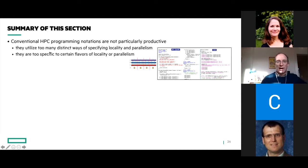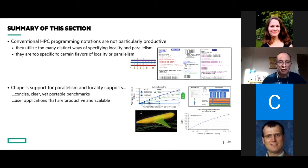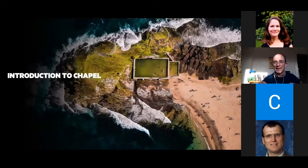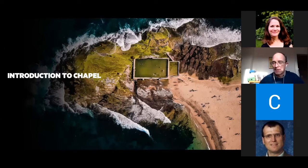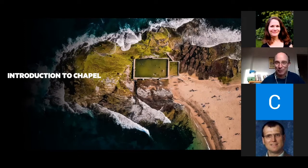To summarize this section: conventional HPC programming notations are not particularly productive. They have too many different ways to talk about the key things we care about — locality and parallelism — and each one of those ways tends to be too specific to certain flavors of locality or parallelism, the algorithm, or the machine. In contrast, Chapel supports parallelism and locality in a way that's concise and clear, giving portable performance, productive benchmarks, and scalable user applications. That's the first part of my talk — where I hope I've woken you up and made you think: this is something I want to learn more about. Next I'll actually show you what Chapel is by teaching you a bit about the language.